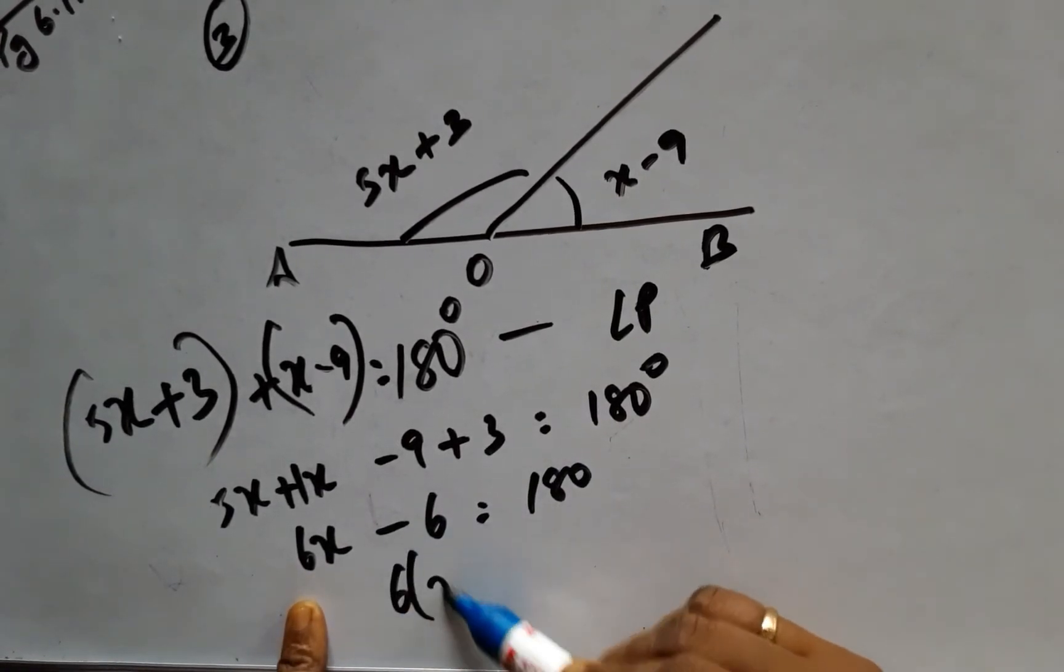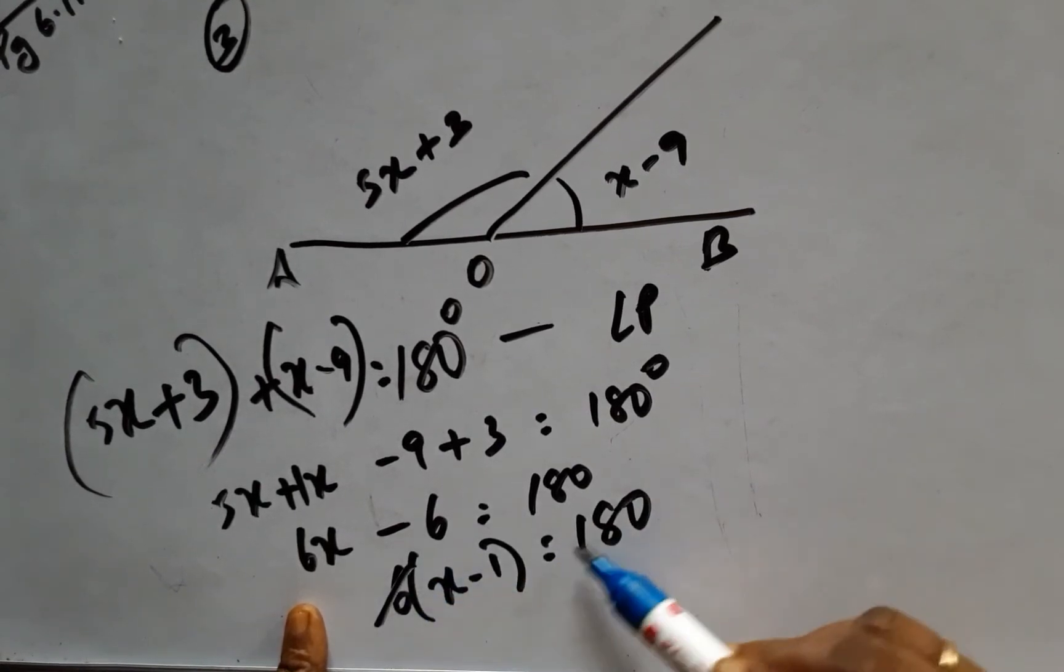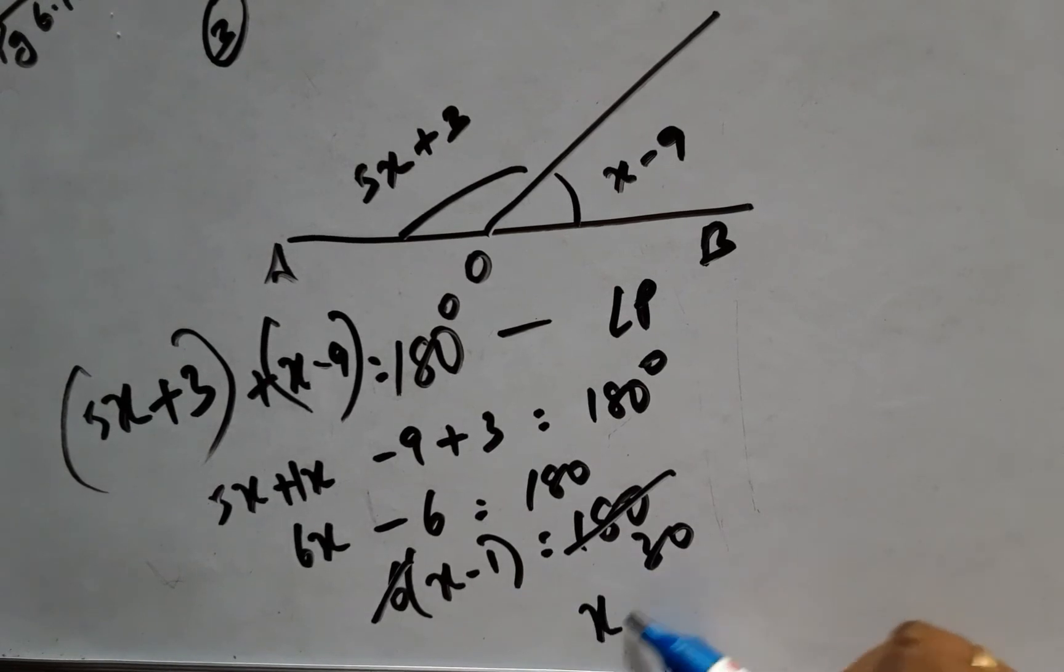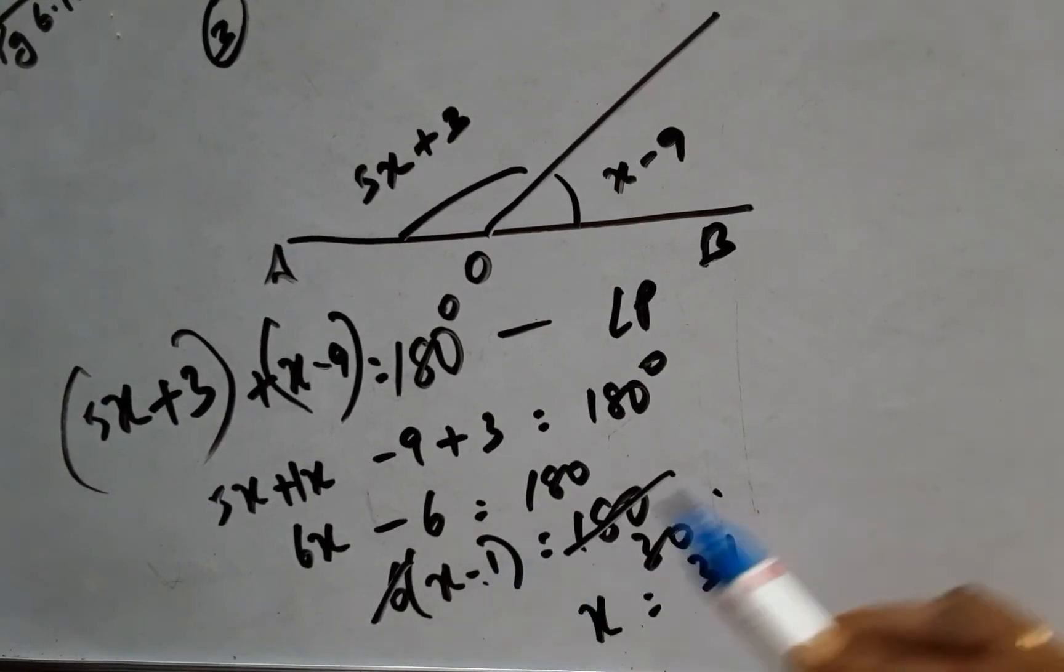It would be 180. And 6 times 30 is 180. And so x will be 31 because 1 comes this way and the negative becomes positive.